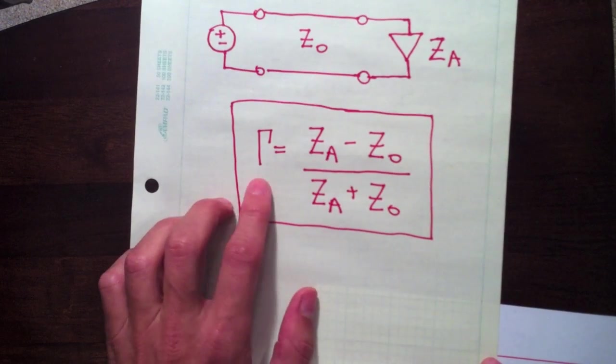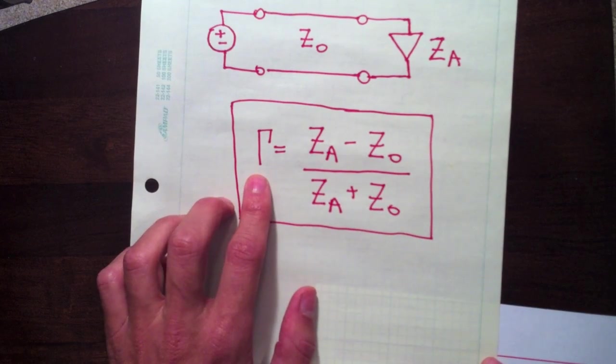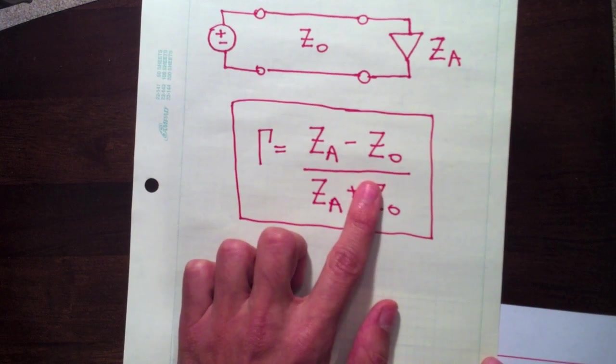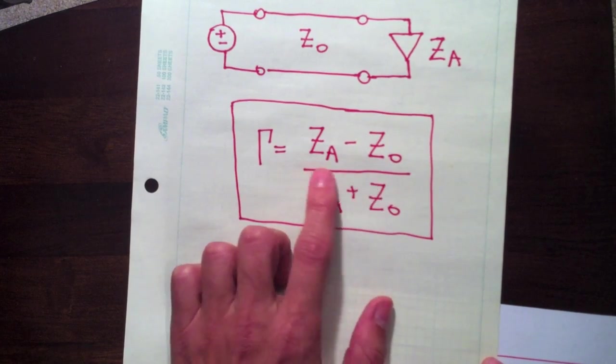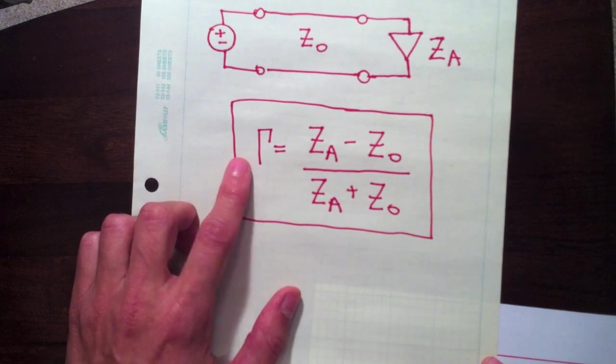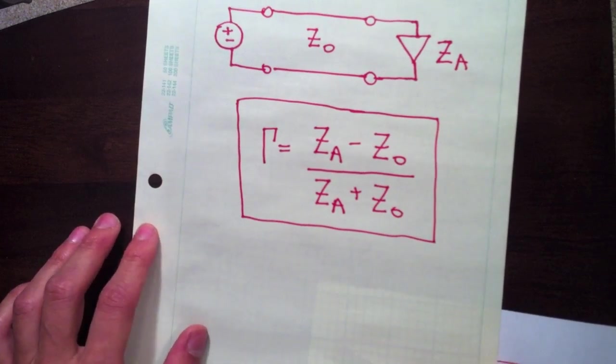So it's calculated via this equation, very simple equation. Z zero is typically real. Often it's just 50 ohms for standard coaxial cables. And Z a is the antenna impedance, which is a complex number. So in general, your reflection coefficient is going to be a complex number as well.